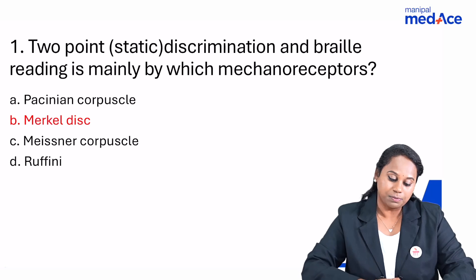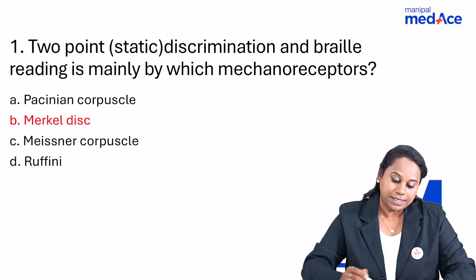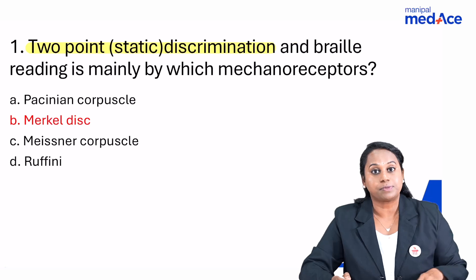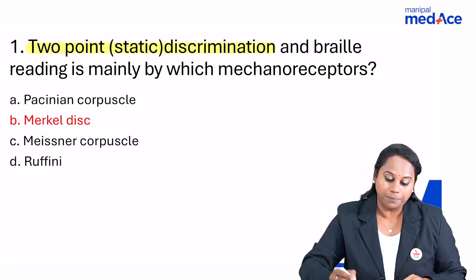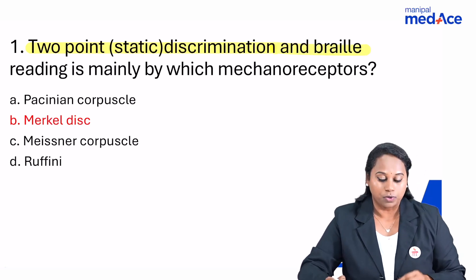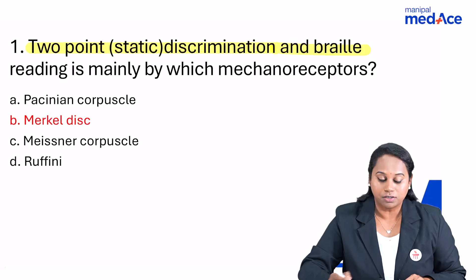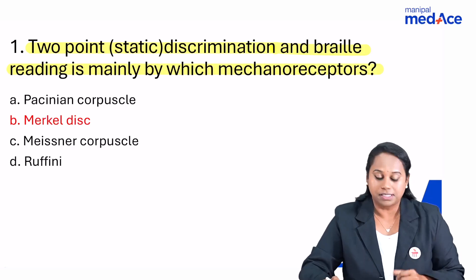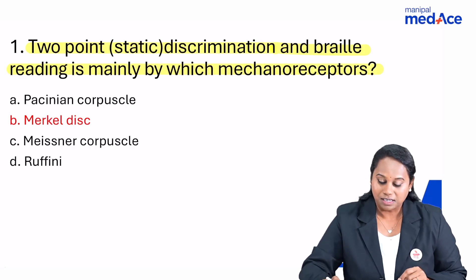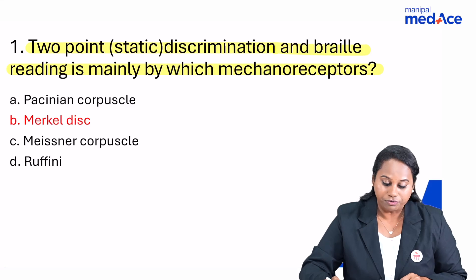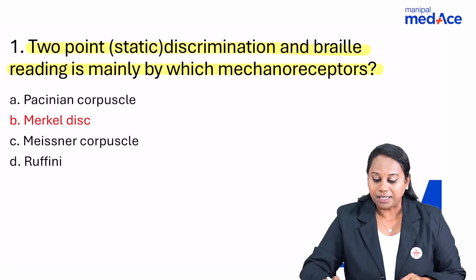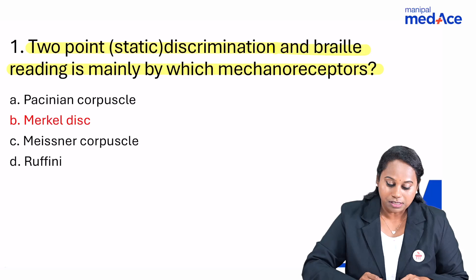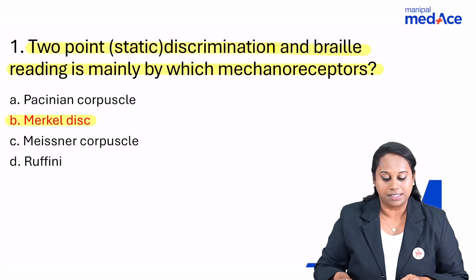The first question was about two-point discrimination. Some students said it was specifically mentioned as static, and some said it was a Braille type of reading related question. Anyways, both have the same answer — two-point static discrimination and Braille type of reading is mainly by which of the following mechanoreceptors? The answer to this would be Merkel's disc.